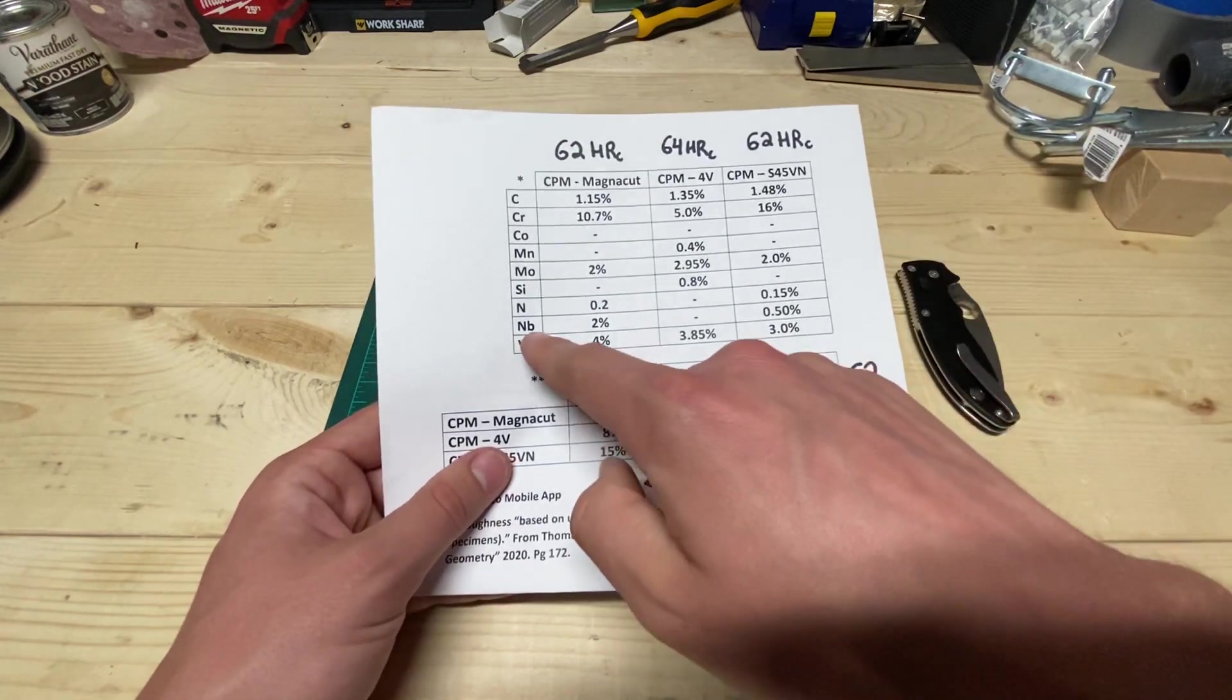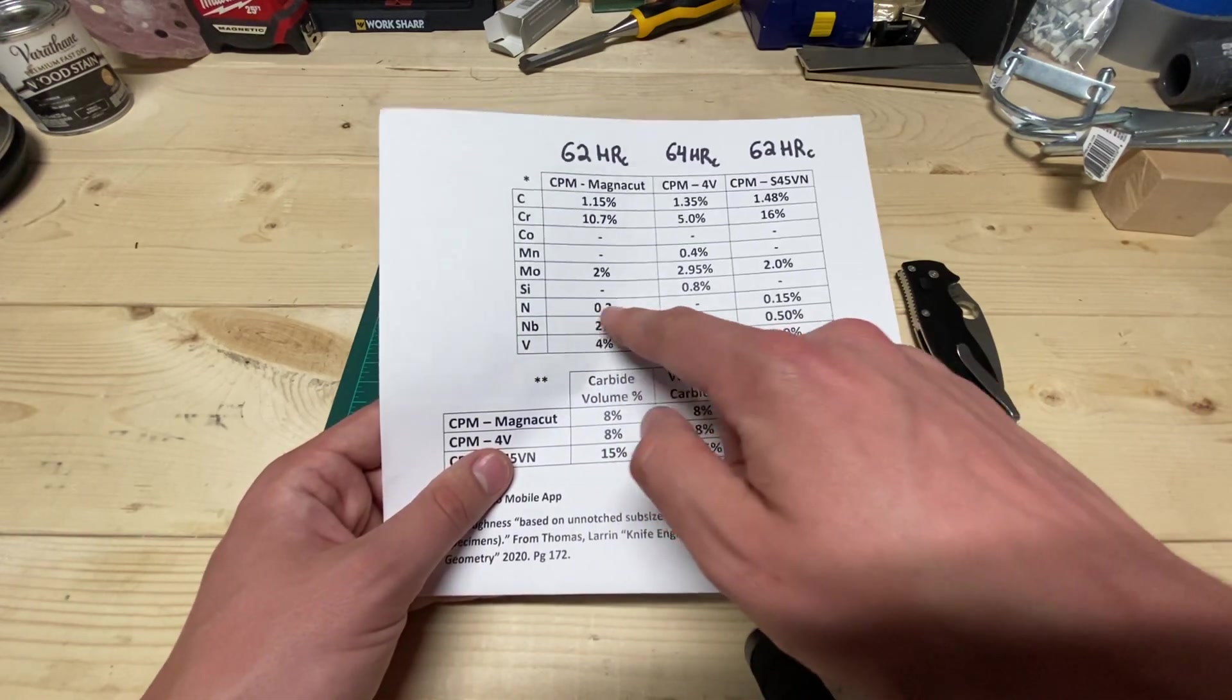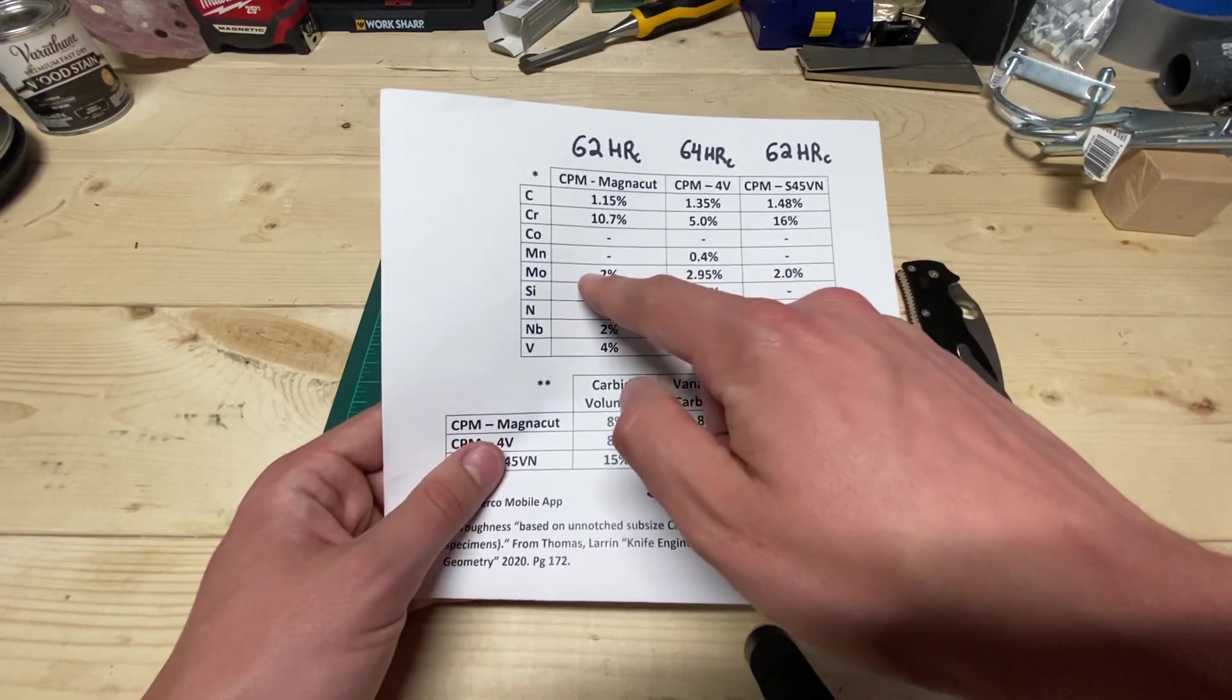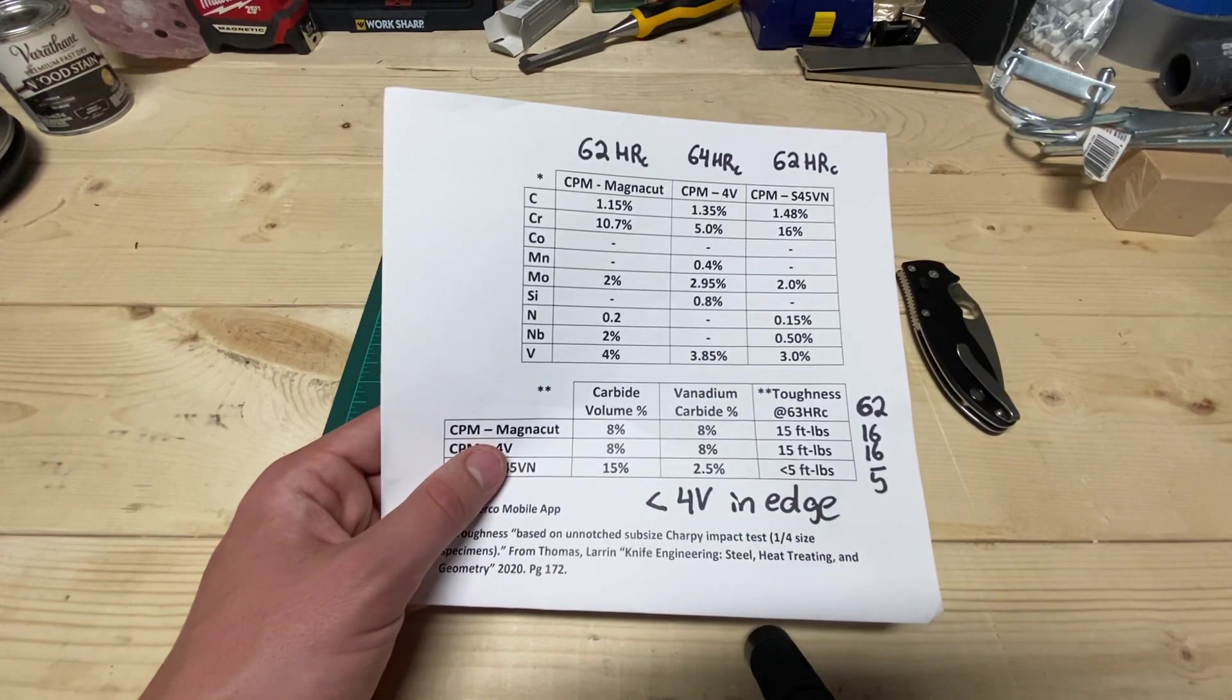So you've got these two down here are for carbide formation and grain refinement. Nitrogen helps with hardening, molybdenum helps with stainlessness, chromium stainlessness, and carbon for hardening and carbide formation.